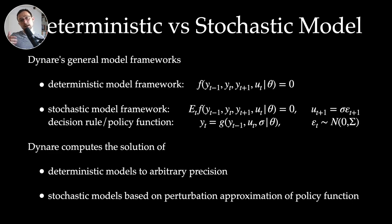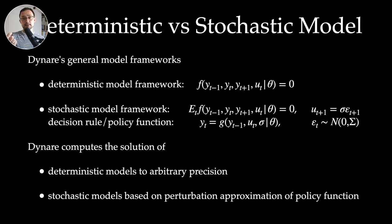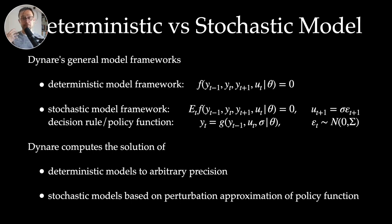To sum up: in the deterministic case we compute trajectories of the variables numerically — we solve for paths and not decision rules — using a Newton-type method, focusing on initial conditions and terminal conditions, with good initial guesses for the values in between. This is a two-point boundary problem and we can do this with arbitrary precision, with one small approximation because convergence to the terminal condition happens in finite time, not asymptotically. In the stochastic framework, the unknowns are the decision functions, approximated by a perturbation method.